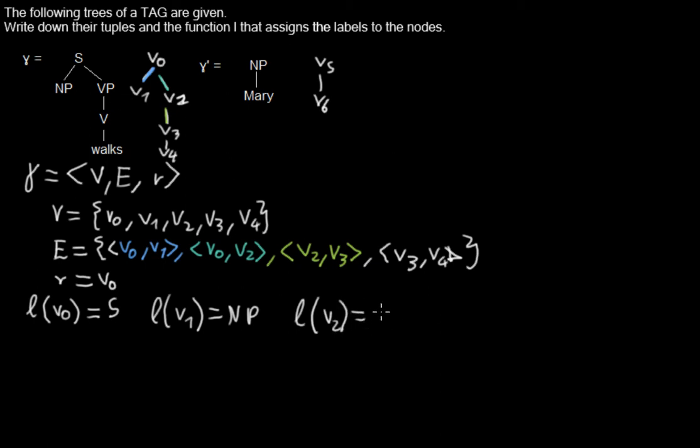The label of V2, it's VP. The label of V3, it's this one here, so it's V. And the label for V4 is walks.